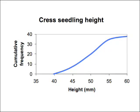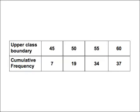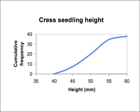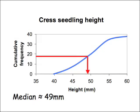Once you have your cumulative frequency curve, you can use it to read off various values, including the median. Remember that the median is the value of the middle data item. Now 37 was our total frequency, and 37 divided by 2 is 18.5. So we find 18.5 on the cumulative frequency axis, draw a line along until it meets the curve, then draw a line down until it crosses the horizontal axis. I estimate the median to be 49mm. Remember, it is the value on the horizontal axis corresponding to half the frequency that gives the median — don't write down half the frequency itself, as that's a very common mistake in tests.